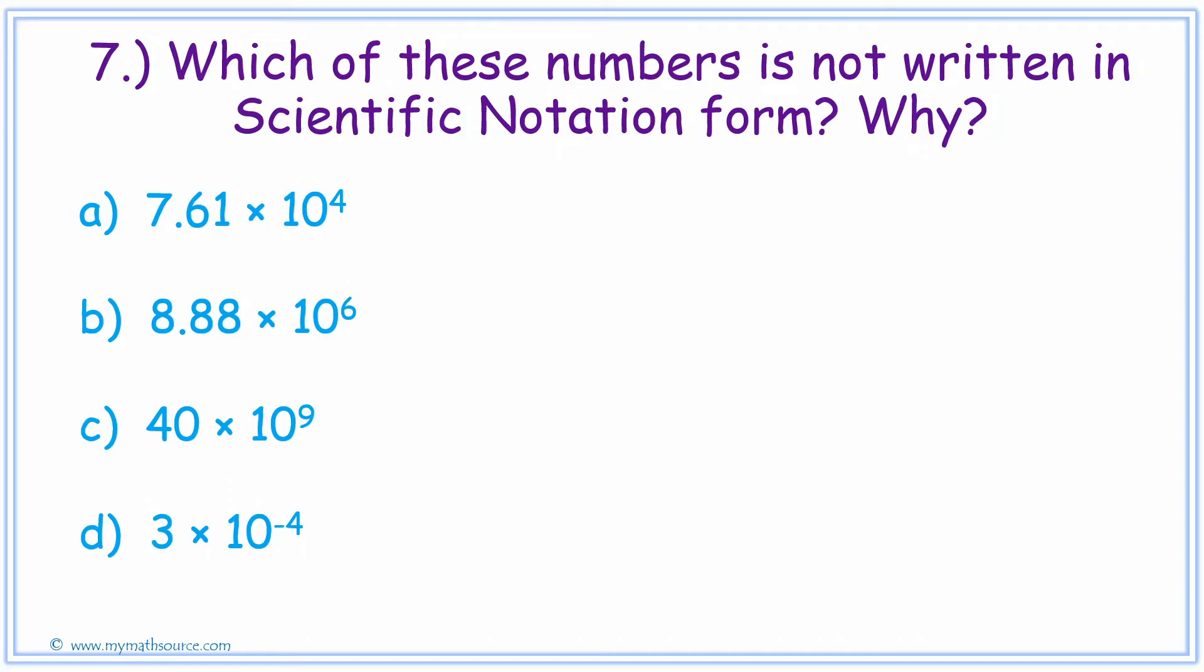Which one of these numbers is NOT written in scientific notation form, and why? You can always pause the video to give yourself more time to think. If you answered C, then you are correct. And the reason why is simply that 10.32 is NOT a number between 1 and 10. It is greater than the number 10, and therefore it is not in scientific notation form.